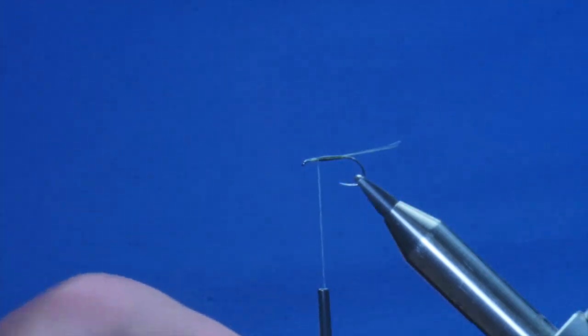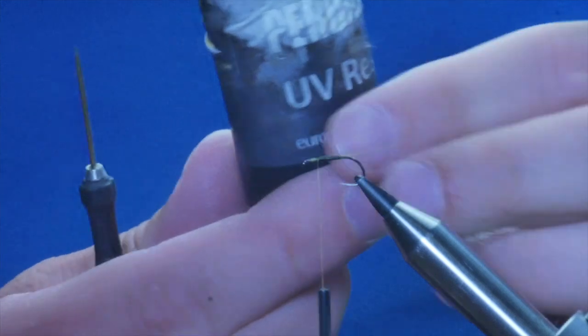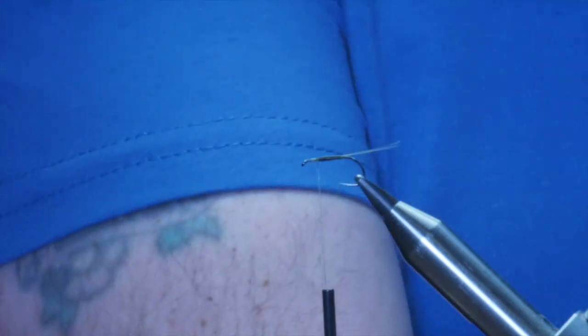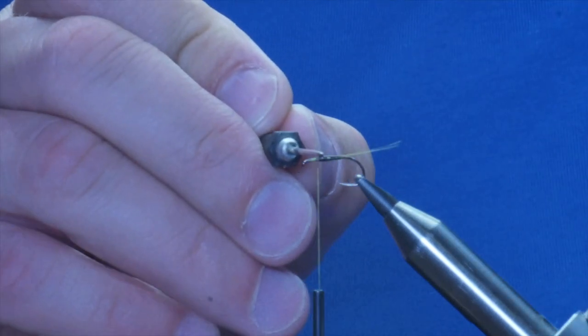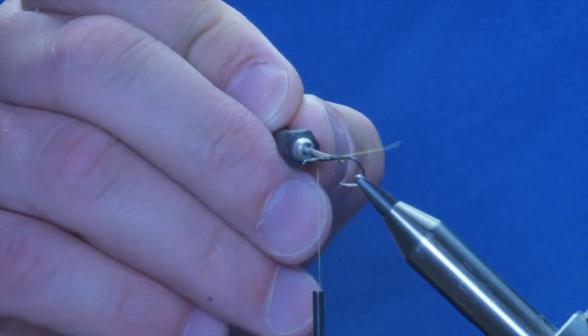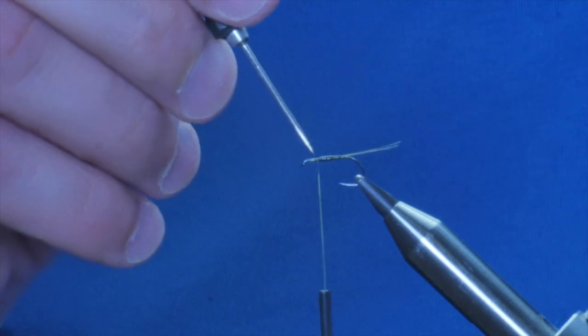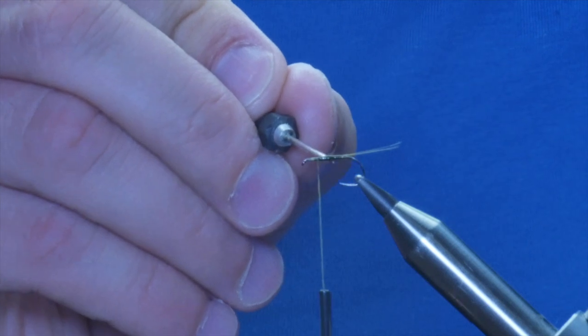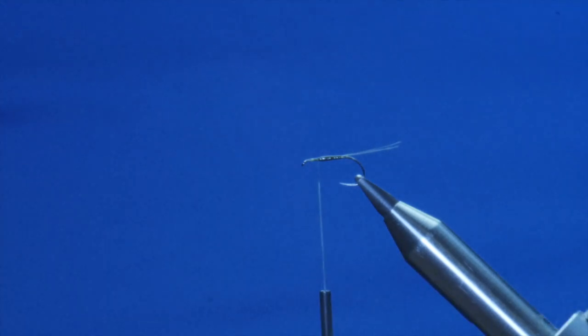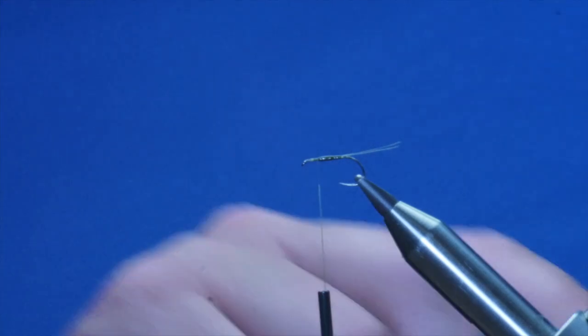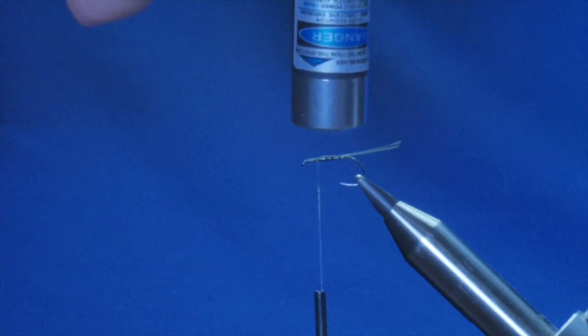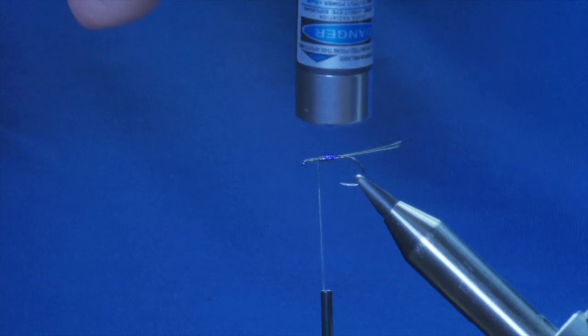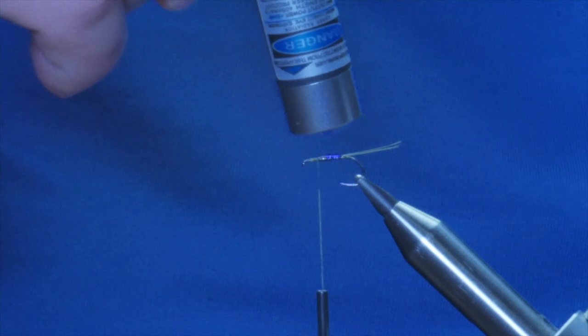Now, I'm going to take my dubbing needle next and take a little bit of my very thin UV resin. Just need a spot on that. No more. It doesn't need to be thick. Now, the UV resin, what it does, it adds the tiniest bit of weight, which will help take my body down into the film. And it gives it a nice sort of shine. It makes it a little bit more realistic. So just make sure that's cured off.